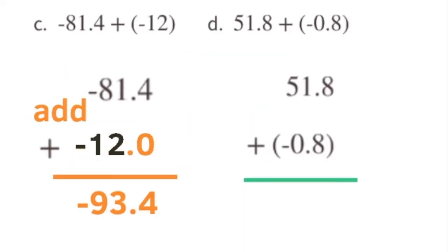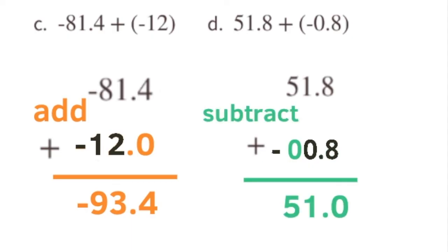Part D: 51 and 8 tenths plus negative 8 tenths. That's the same as 51 and 8 tenths take away 8 tenths. So we subtract 8 tenths from 51 and 8 tenths, giving us 51.